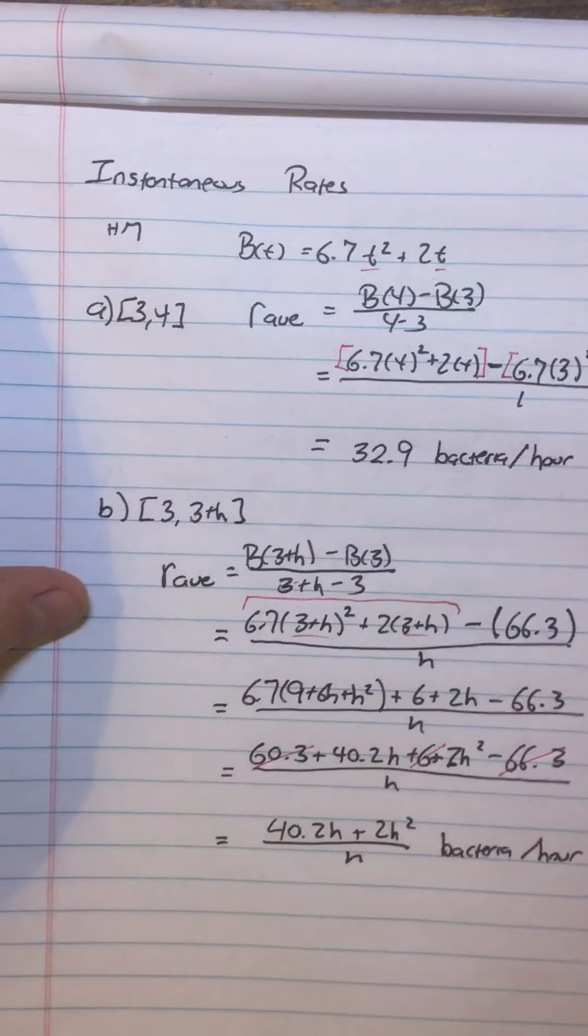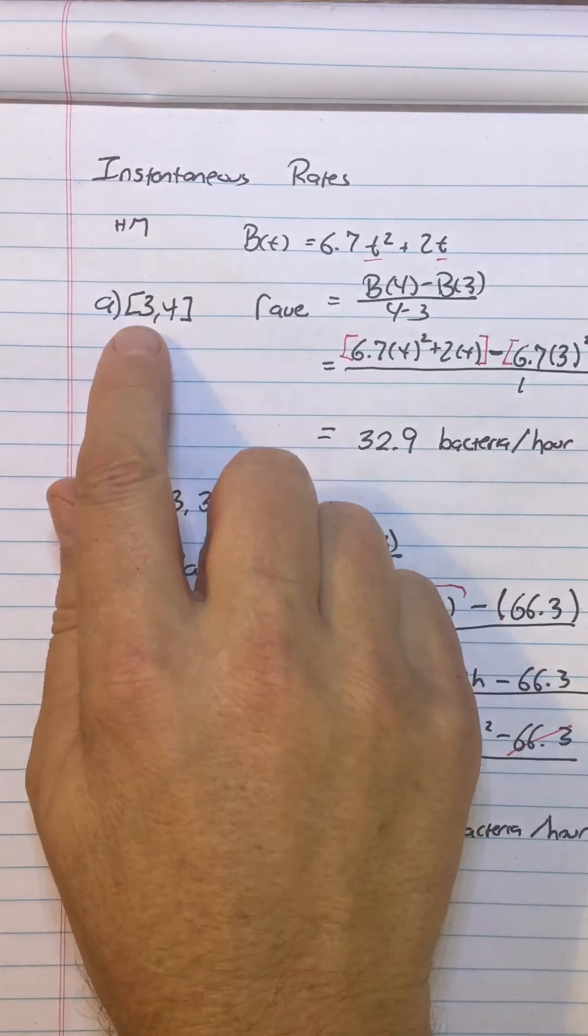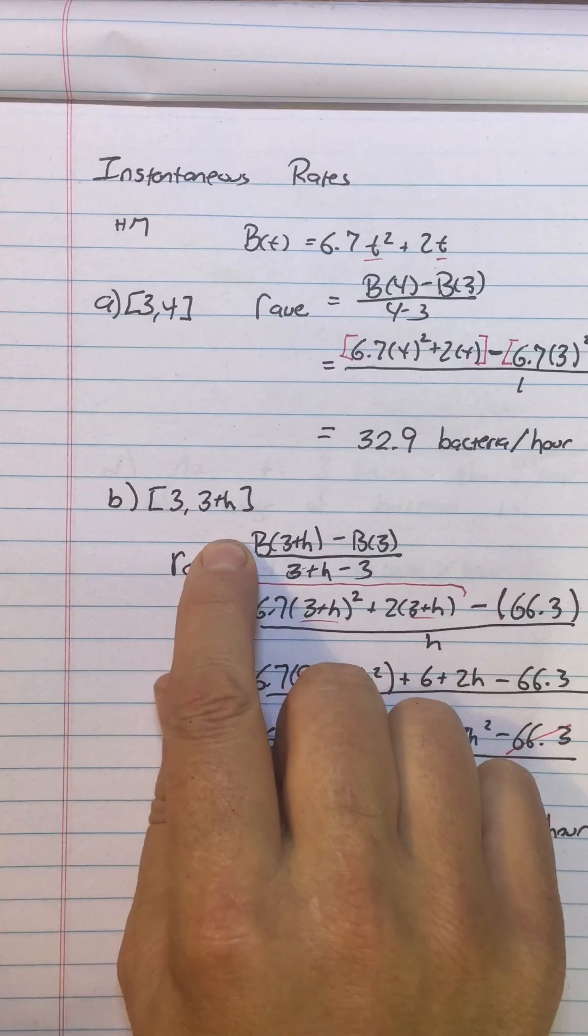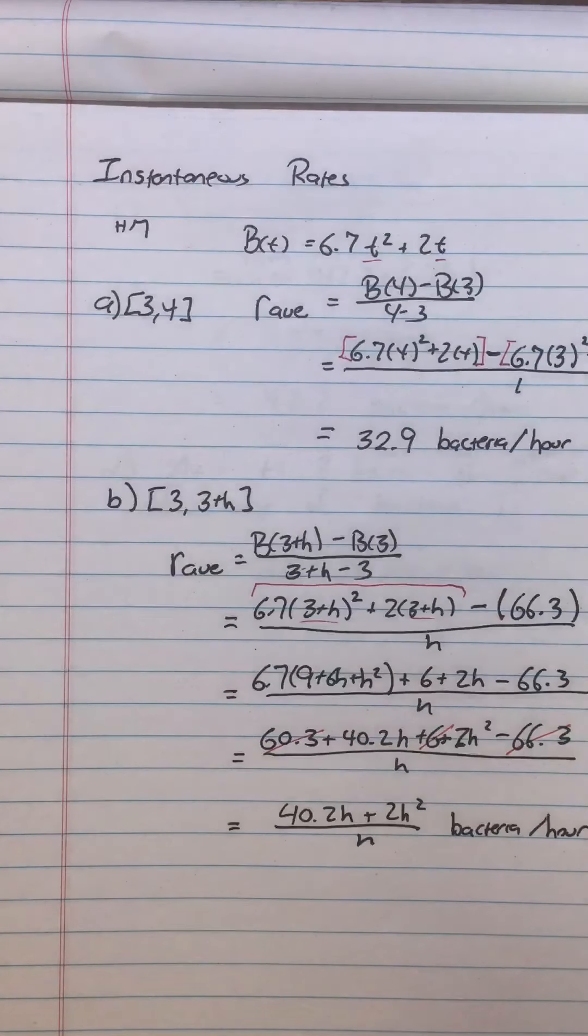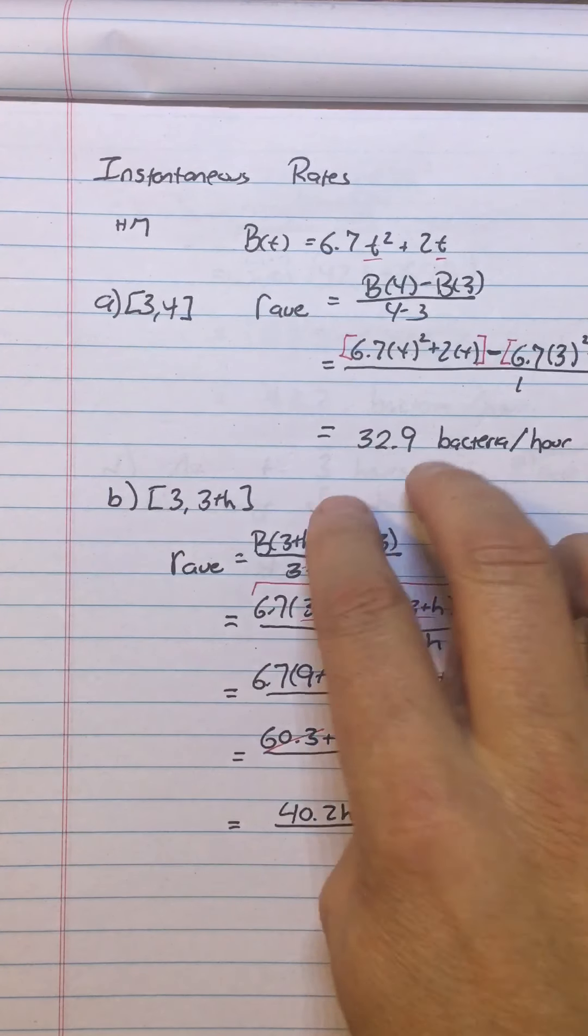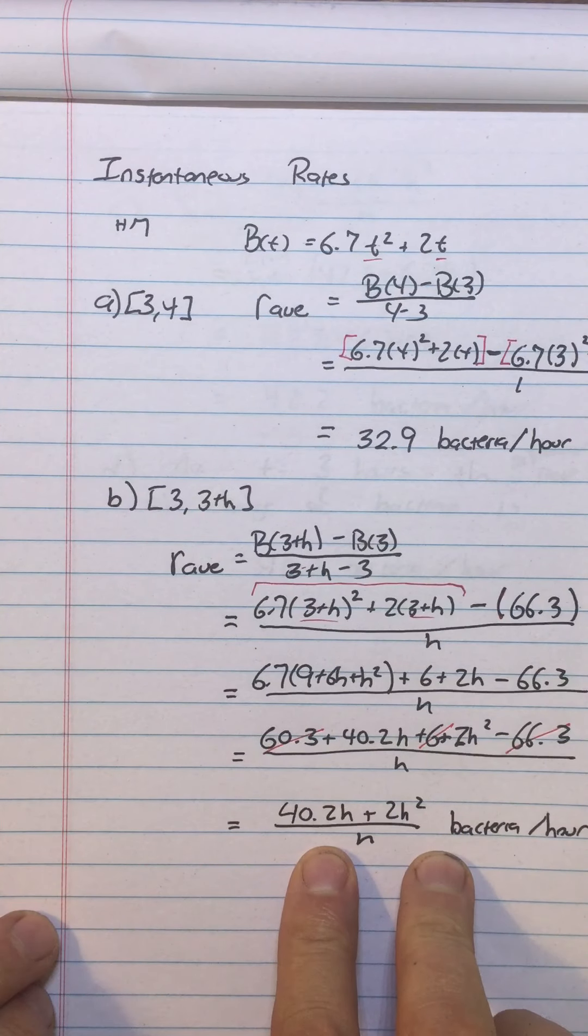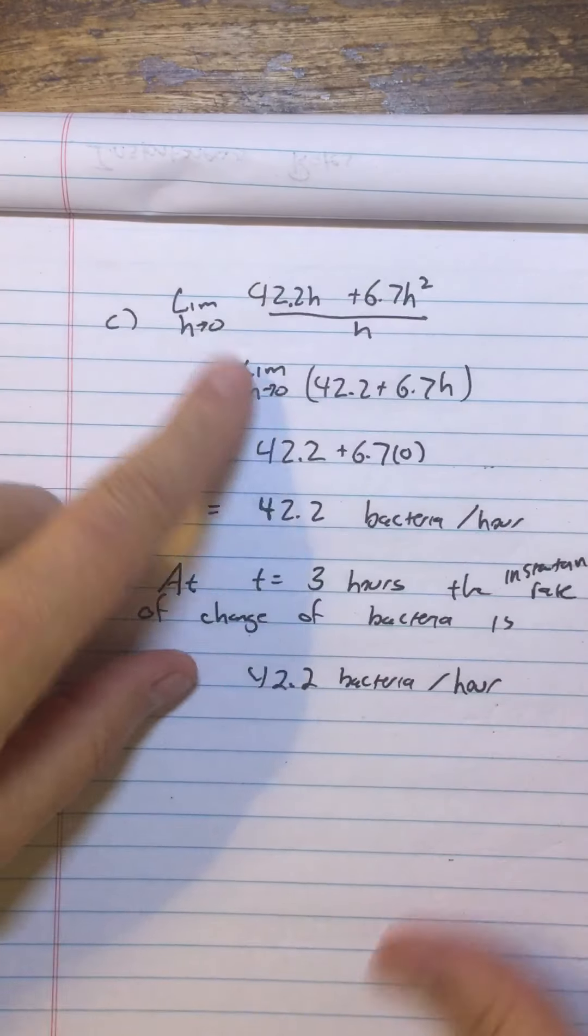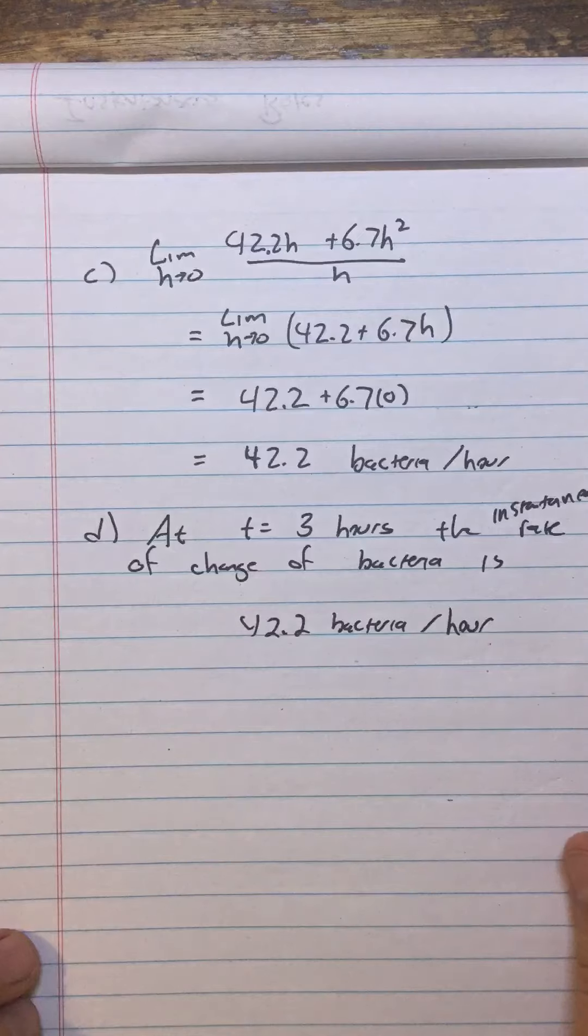If we wanted to find the instantaneous rate of change at t equals 5, we would use 5.6 and then 5, 5 plus h. Or you could skip the whole 5.6 step. If I want the instantaneous rate of change at t equals 5, I would just do 5 and 5 plus h, get the expression for average rate of change over 5, 5 plus h, and then I would take a limit as h approaches 0, and then that would be the instantaneous rate of change at 5.